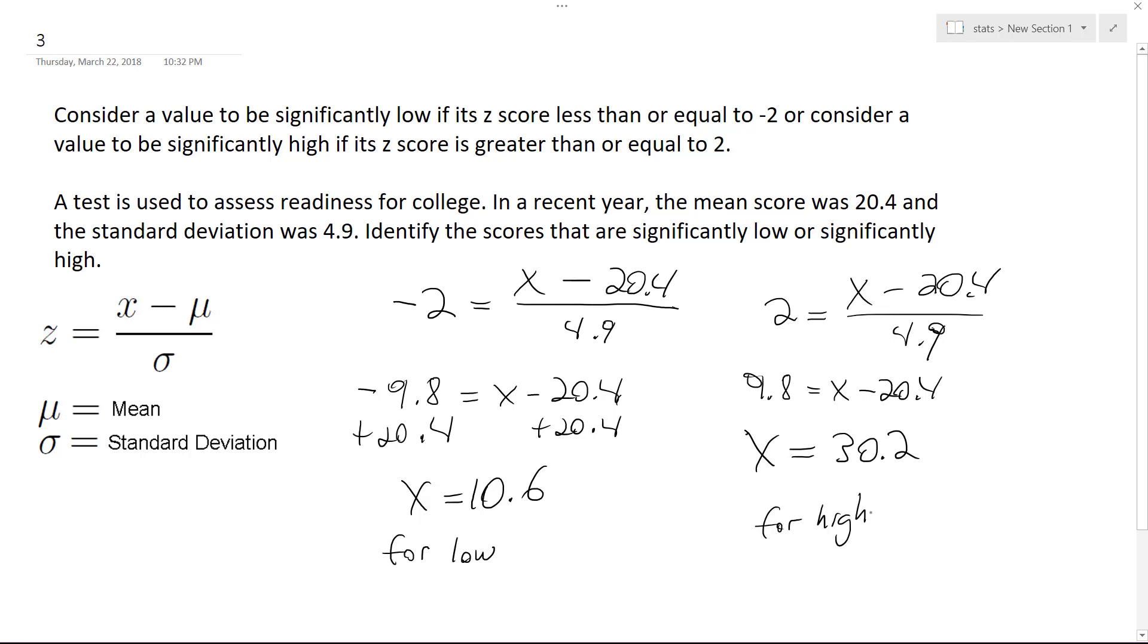So those are the scores for the college entrance exam to have a z-score of either negative 2 or less - score 10.6 or below - and then for z-score 2 or above, you gotta score 30.2 or above.